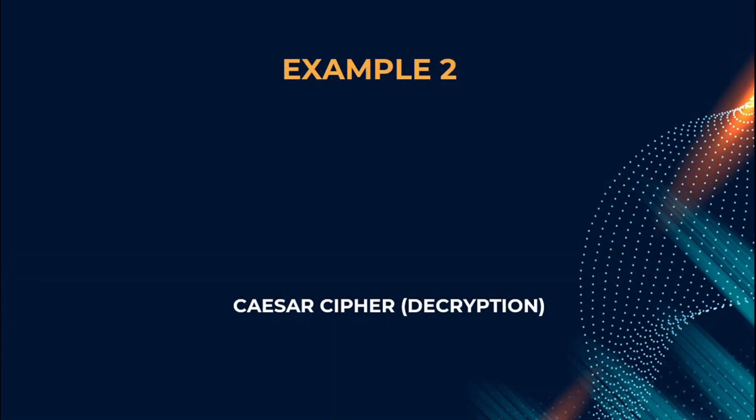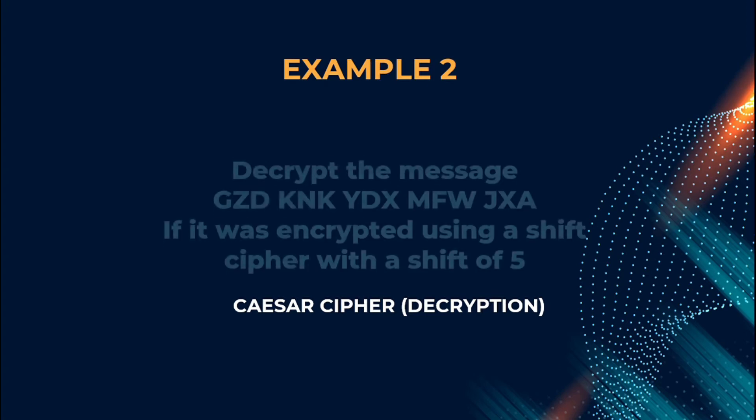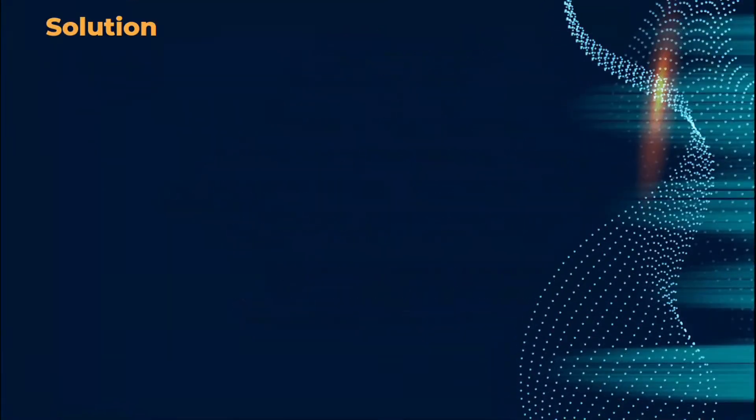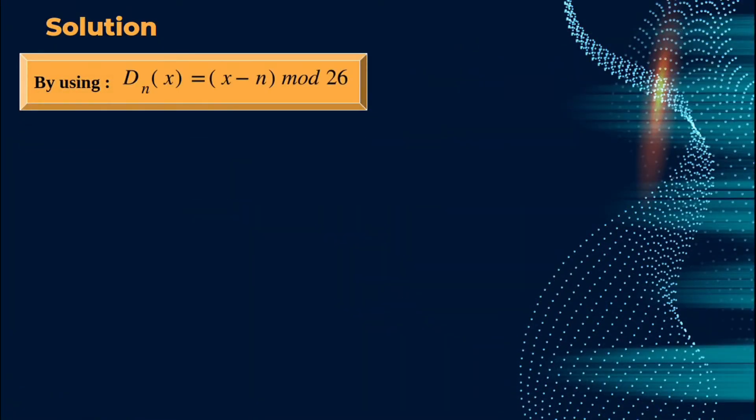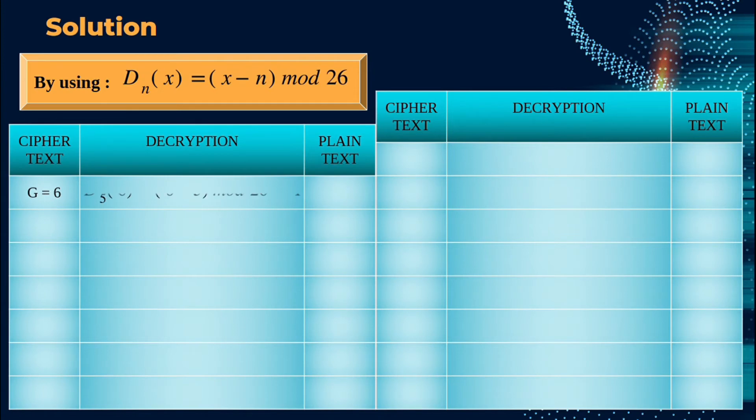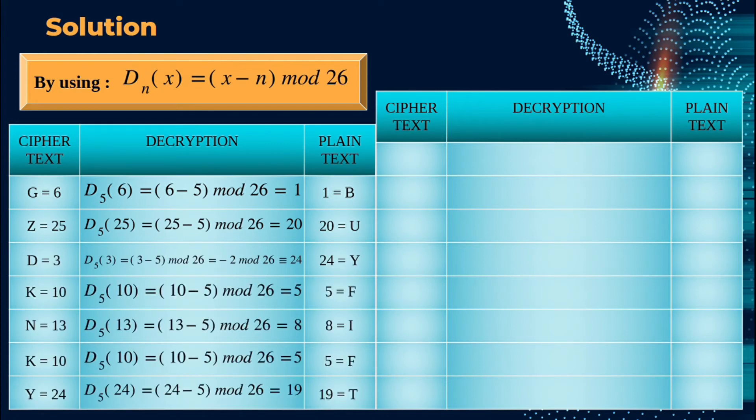Next, we move on to the other example for decryption process of Caesar cipher. The question is, decrypt the message G Z D K N K Y D X M F W J X A if it was encrypted using a shift cipher with a shift of 5. So, the solution is, by using D(X) equals to X minus N modulo 26 with N equals to 5 as shift of 5 was mentioned in the question. The first ciphertext is G. By referring to the representation table, G can be represented into a plain value of 6. By using the formula, 6 minus 5 modulo 26 equals to 1, and 1 represents letter B as the plaintext.